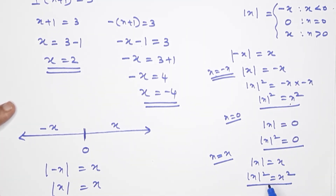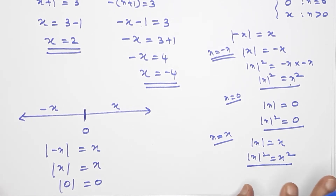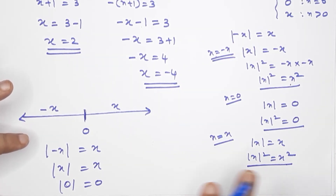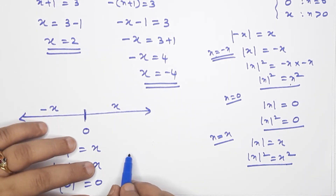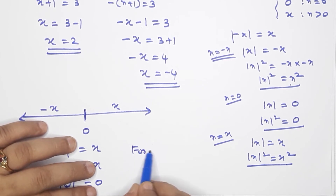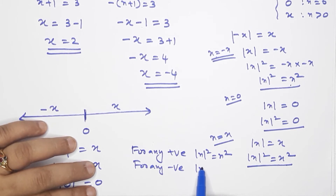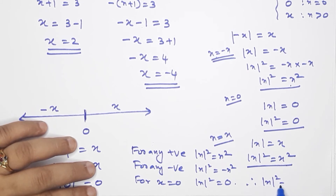So for the three conditions: if any positive number, modulus of x squared equals x squared. If any negative number, modulus of x squared equals x squared. If zero, modulus of x squared equals x squared. Thus we prove this condition is satisfied in all cases. For any number, modulus of x squared is equal to x squared.